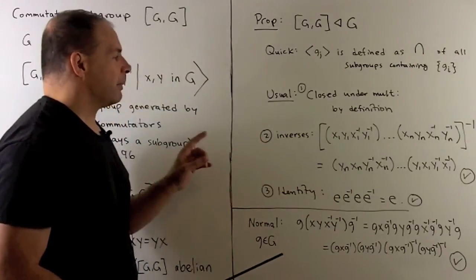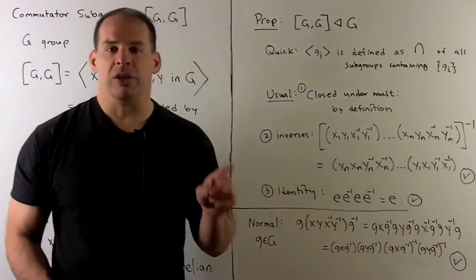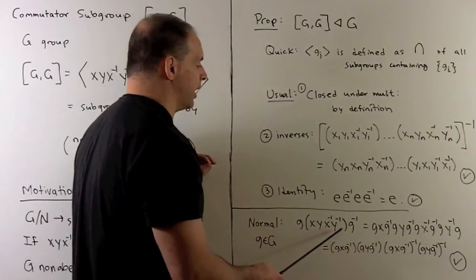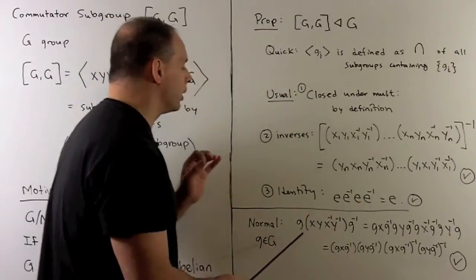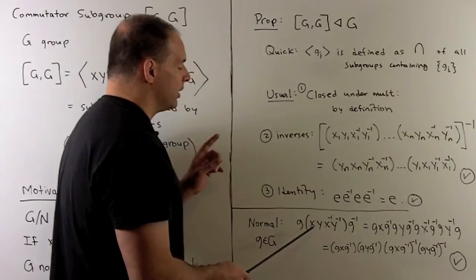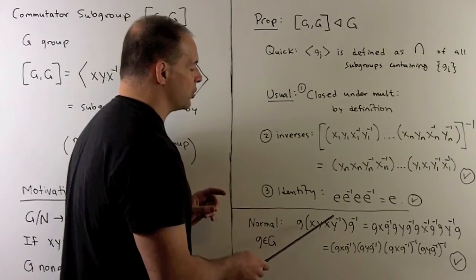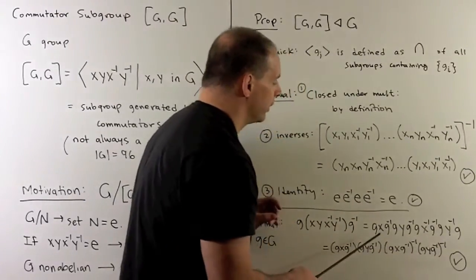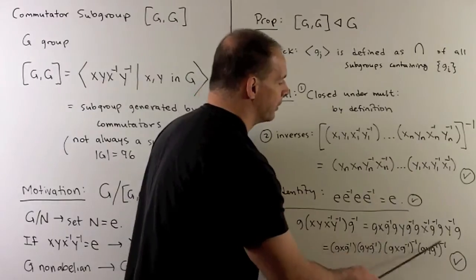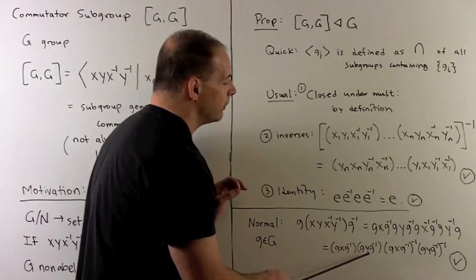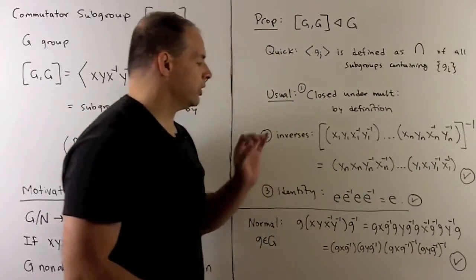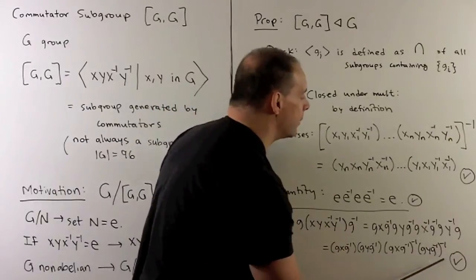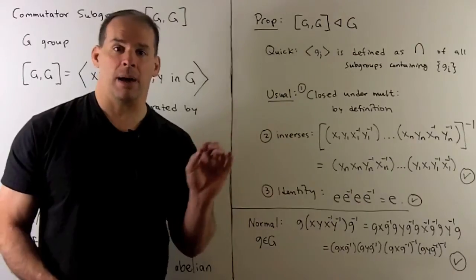For the normal property, same idea: take a product of commutators, conjugate by a g in the group, and show that gives us another product of commutators. We'll show it for a single commutator. The trick: pick g in the group, take our commutator, and fill in each space between x, y, x inverse, y inverse with the identity written as g inverse g. Grouping items in threes and using the inverse reversal rule, we see this gives us another commutator. So if we conjugate, commutators go back into commutators — so it's normal.